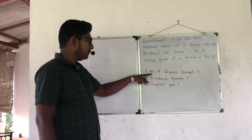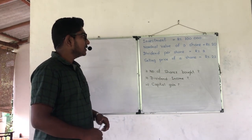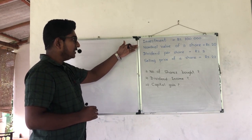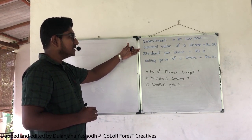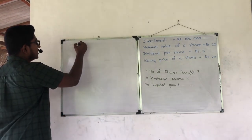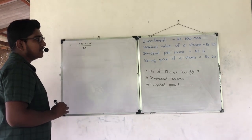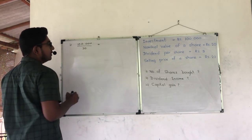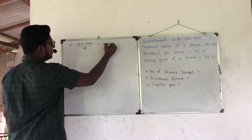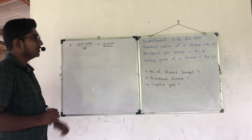First question, we have to find the number of shares the person can buy. If the investment is given, we can divide the investment by the price of one share, 20 rupees, to find the number of shares. So we get 5,000. For 100,000 rupees, the person can purchase 5,000 shares.